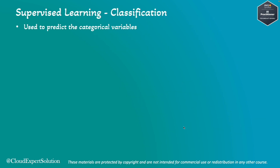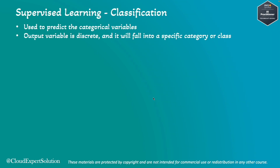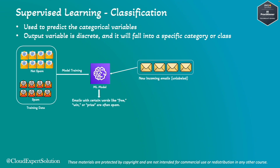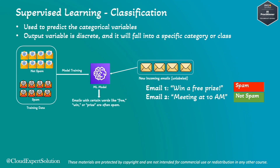Next, we'll review classification. Classification is a type of supervised learning where we predict categorical variables as output. The output variable is discrete and will fall into one of a specific category or class. The previous example of identifying spam versus not spam emails was a perfect example of classification. If we have two new emails — one with subject line 'win a free prize' and another with 'meeting at 10 am' — the trained model can correctly classify email one as spam and email two as not spam. The outcome should always be discrete or fall into a specific category; the email either is spam or not spam, with no status in between.